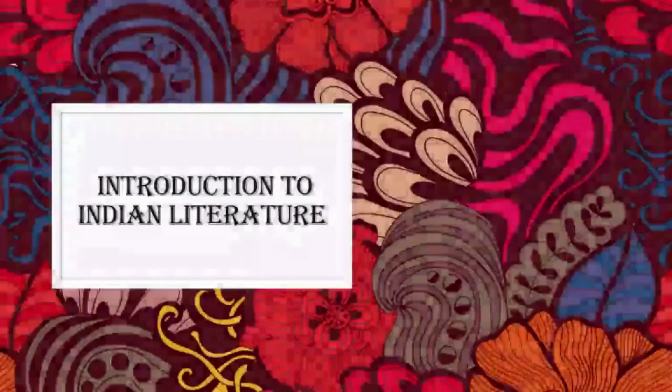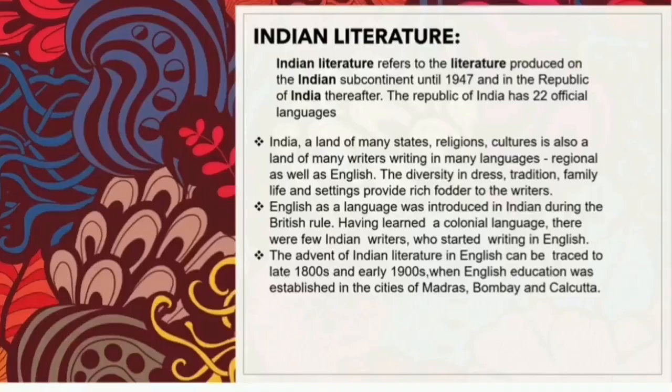Introduction to Indian literature. Indian literature refers to the literature produced on the Indian subcontinent until 1947 and in the Republic of India thereafter. The Republic of India has 22 official languages. India, a land of many states, religions, culture, is also a land of many writers writing in many languages, regional as well as English.